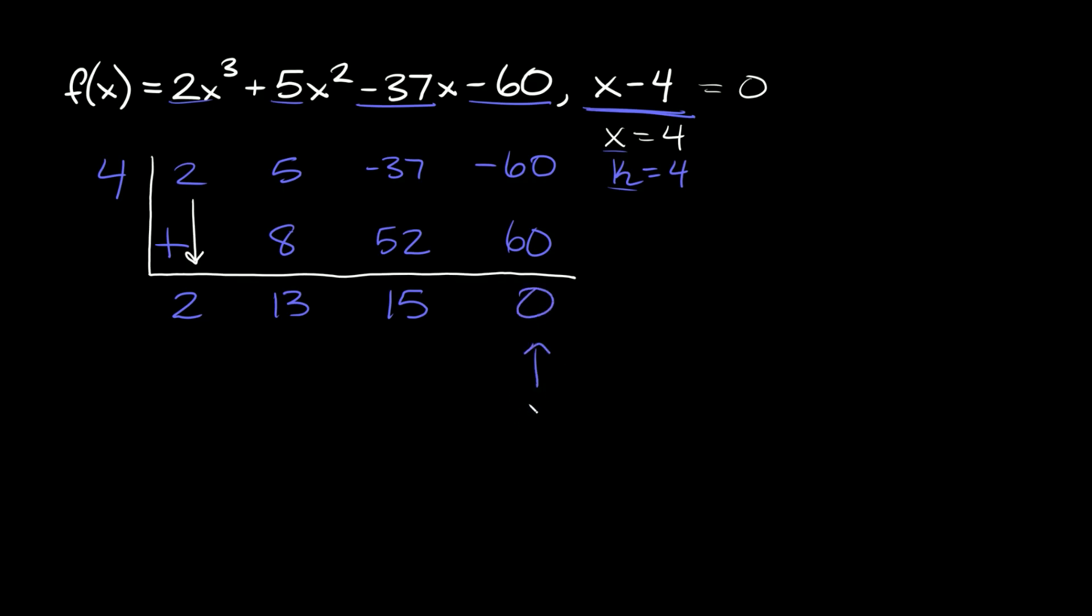So this number right here is your remainder. This one is your constant. This one would be your x to the first term. And this would be your x squared term, the coefficient for your x squared term.